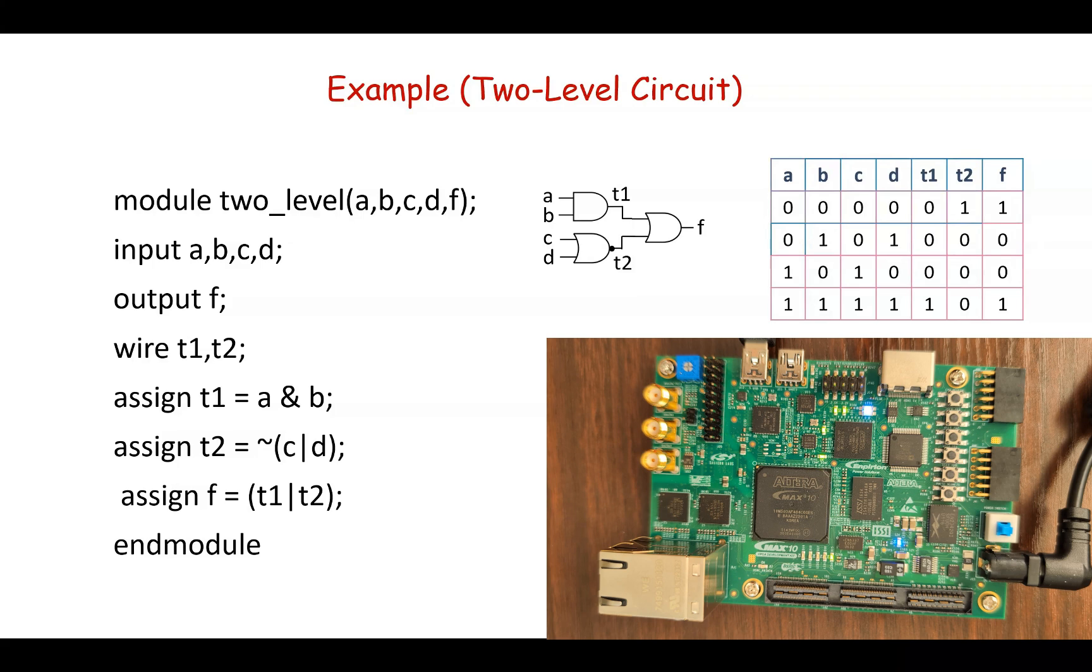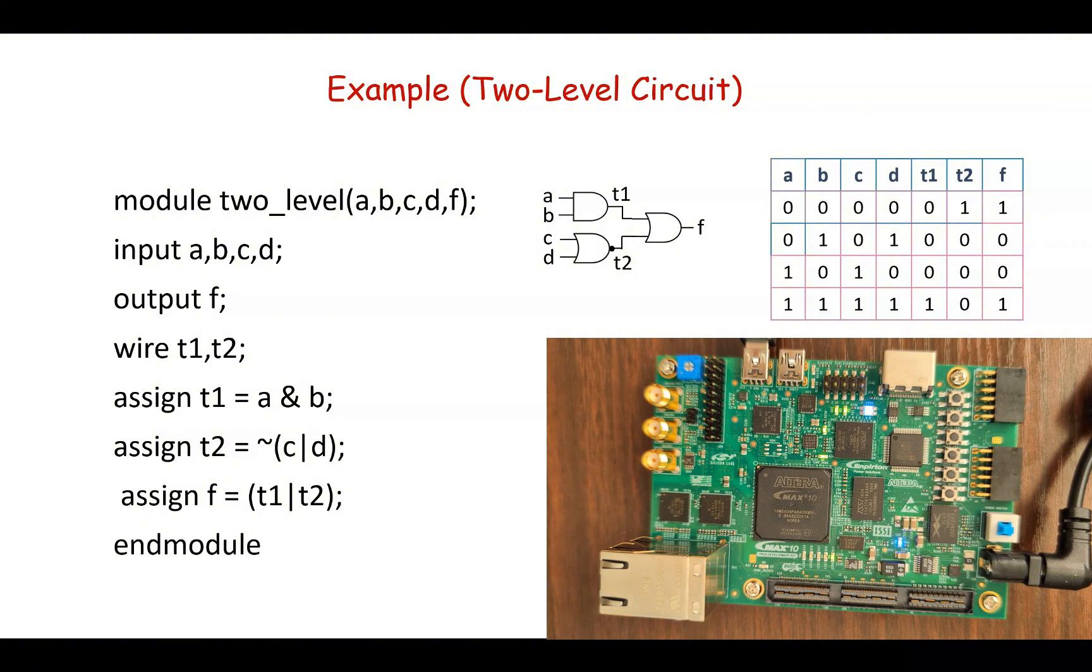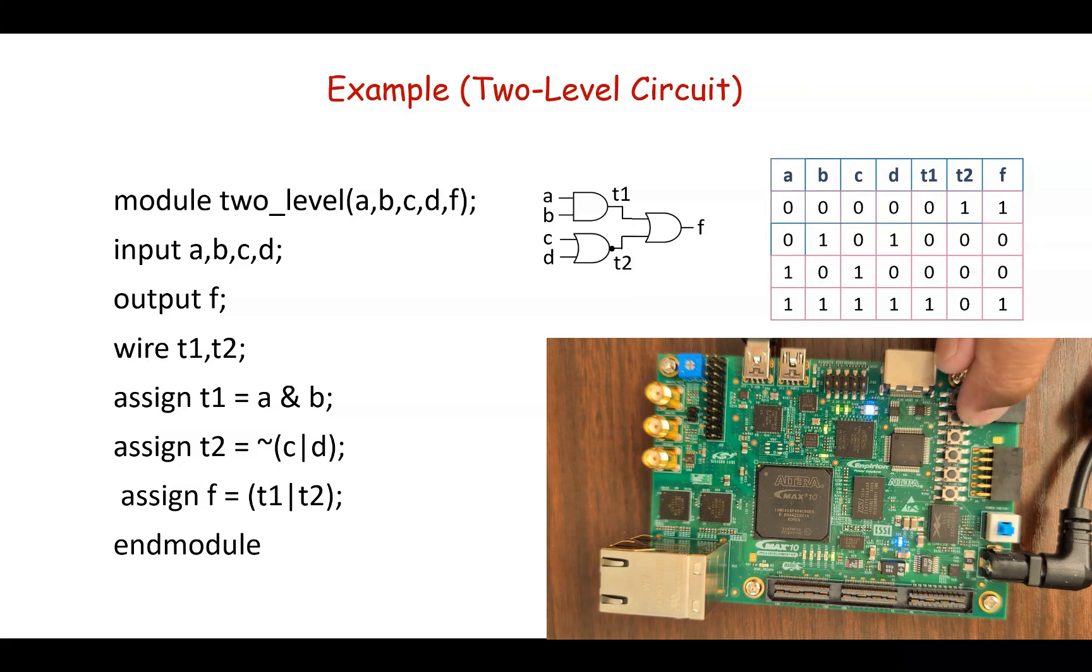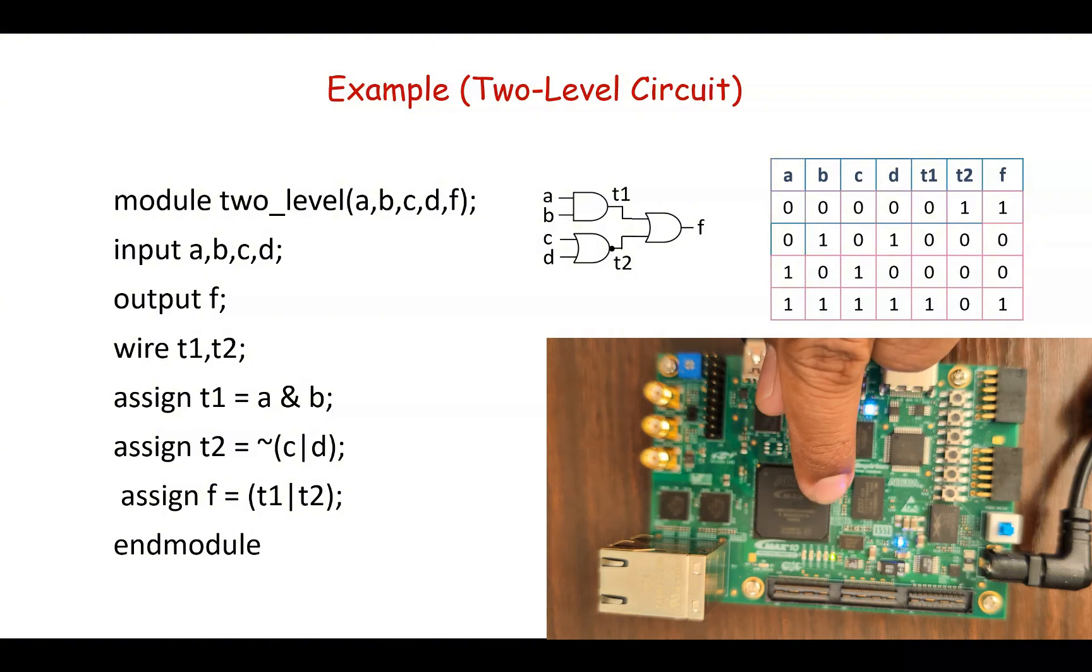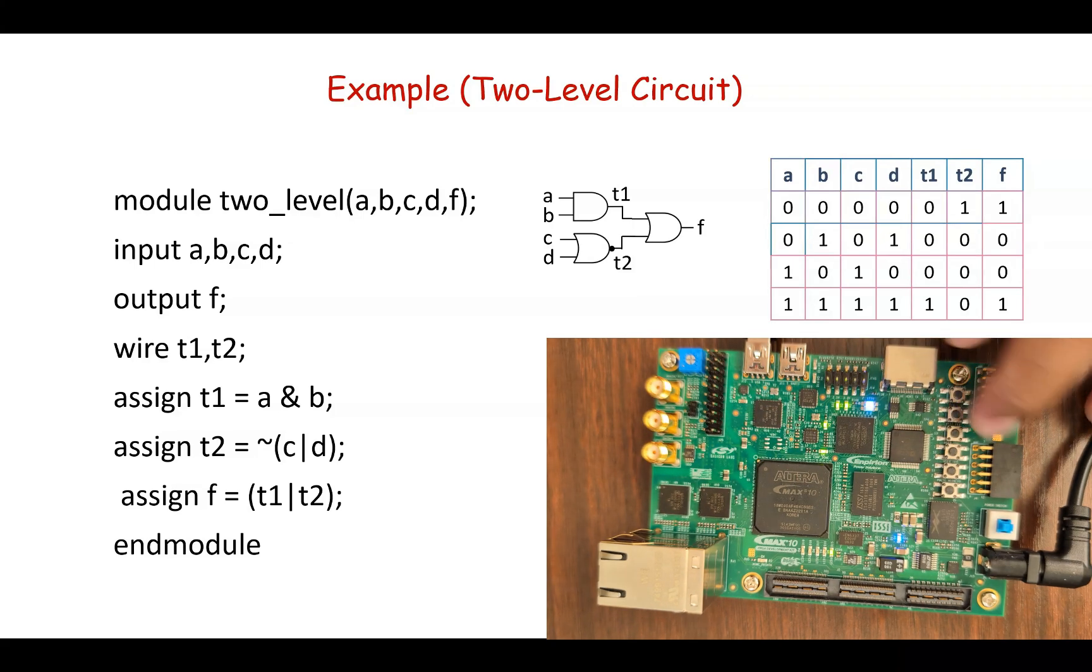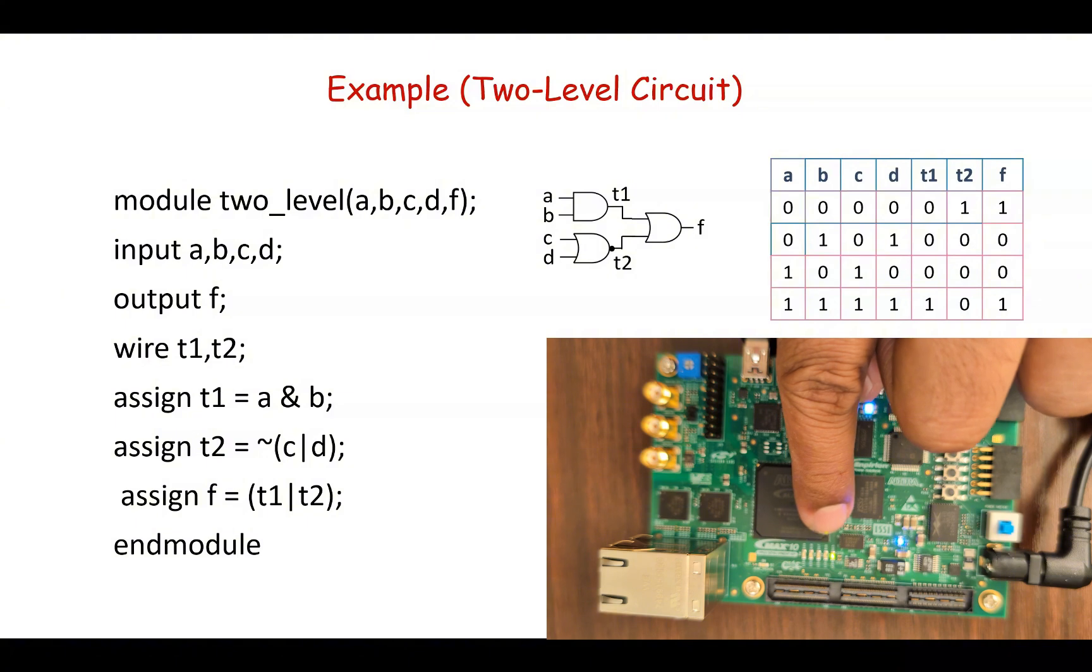So according to the truth table, if all of these inputs are 0 then we'll have output as 1. So as we discussed before, by default these switches are 1. So the last logic or the last values of the truth table, you can see if all is 1 then LED should be on or the output should be high. So here all of the switches are 1 and our LED is on or the output is high.